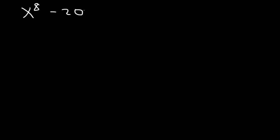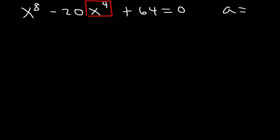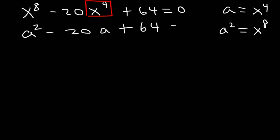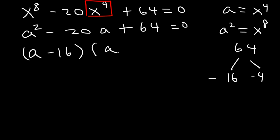Let's try this one: x to the 8th minus 20x to the 4th plus 64. Let's set a equal to x to the 4th, which means a squared is x to the 8th. So we have a squared minus 20a plus 64. Two numbers that multiply to 64 but add to negative 20 are negative 16 and negative 4, so it's a minus 16 and a minus 4.